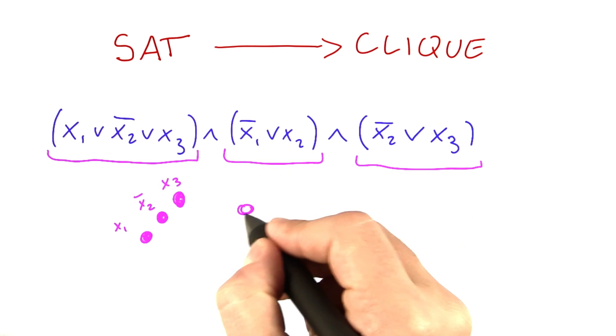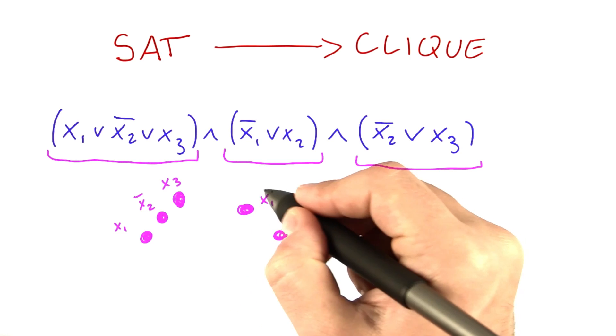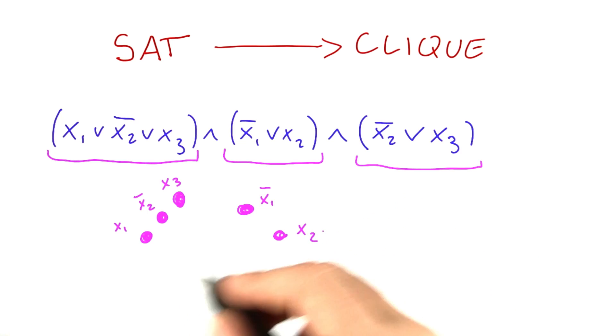For this one here, we're going to do another group. This one here is for the not x1. This one here is for the x2. And for that clause down here, we're going to do the same thing. So we have not x2, and here we have x3.